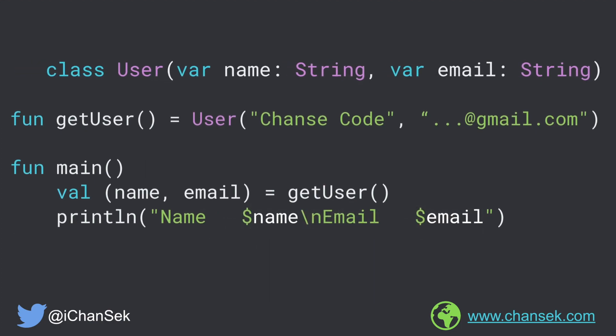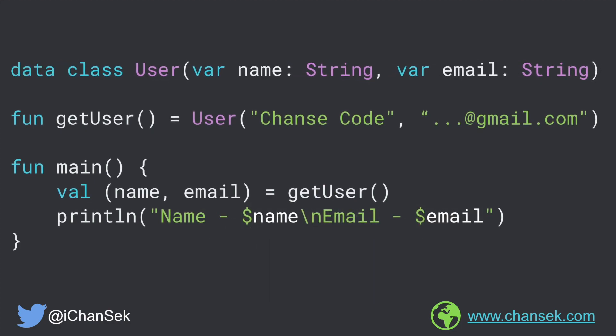In addition to that, we can also declare the User class as a data class. Once the User class is converted into a data class, the compilation error vanishes. You may ask: the Kotlin compiler was complaining about component1 and component2 functions and we haven't declared those yet — how does making the User class a data class solve that? The answer is the Kotlin compiler generates the component1 and component2 functions on our behalf because it is declared as a data class.